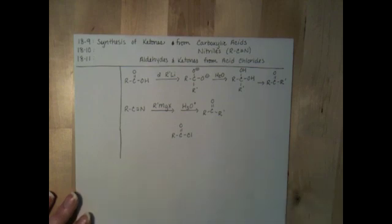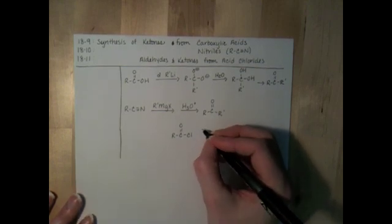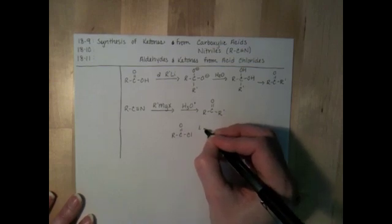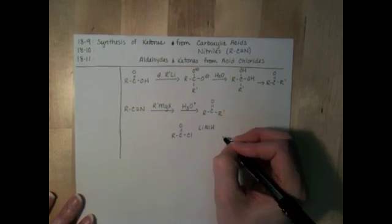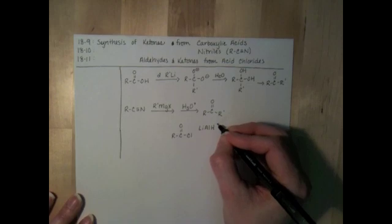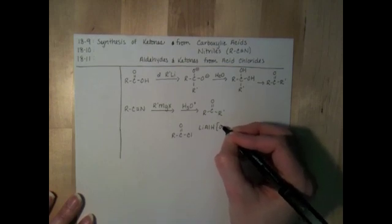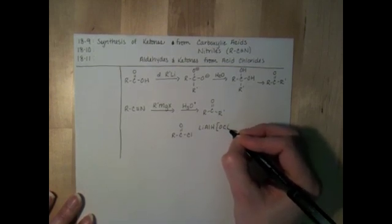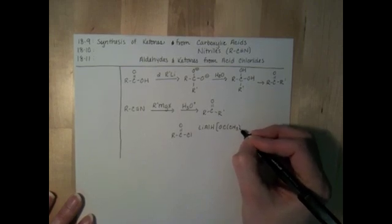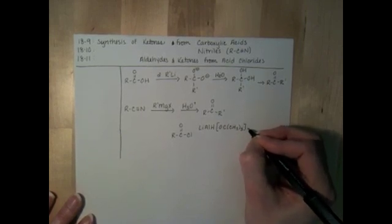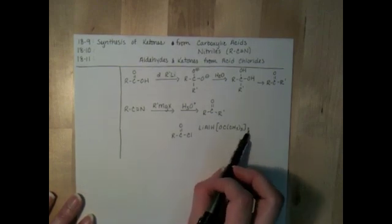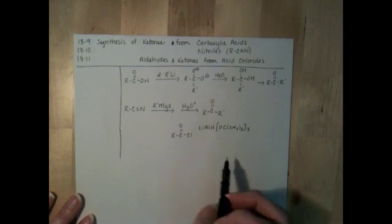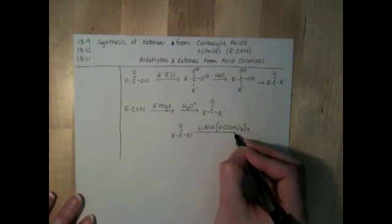And this, we can react with a reducing agent, mild reducing agent, very similar to lithium aluminum hydride, but it is lithium aluminum tri-tert-butoxy hydride. So you're going to have a lot of threes in the formula. But it's tri-tert-butoxy. Here's the tri-tert-butoxy group. There's three of them. And then lithium and aluminum and one hydrogen.